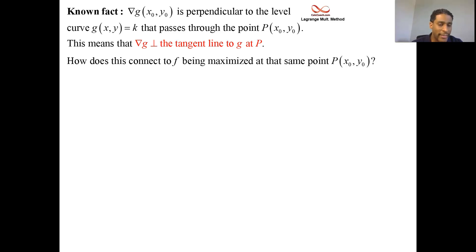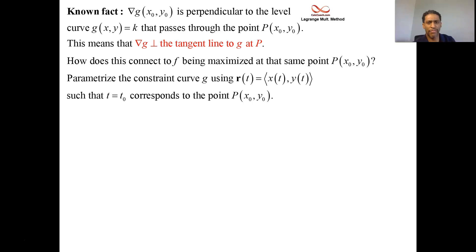And so what we're going to do is parametrize, just talk about the idea of it, parametrize our constraint function g. Get a space curve for it, r(t), parameter t, got some x(t) function, some y(t) function that will travel along the curve. When you're at t₀, you're corresponding to your point x₀, y₀. That's the point P, the point of tangency. And we could parametrize it that way.